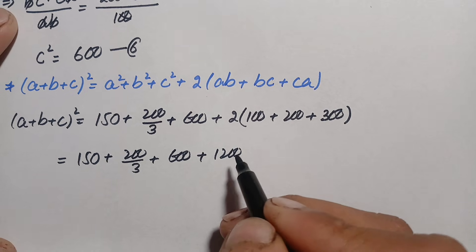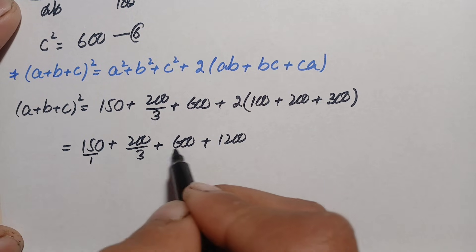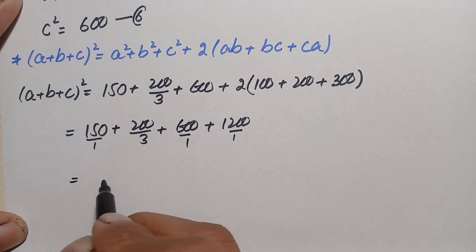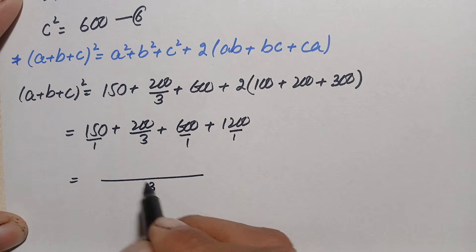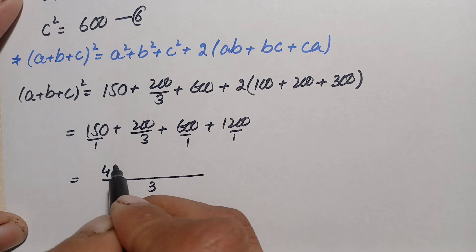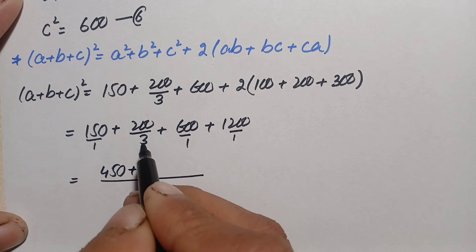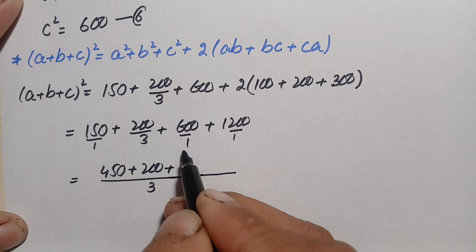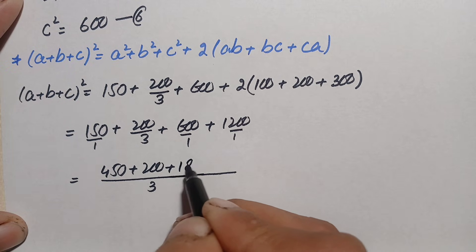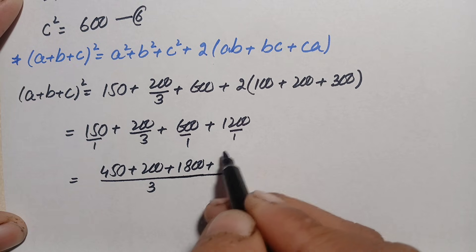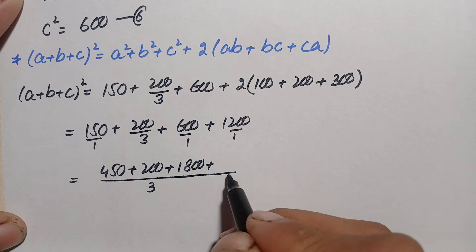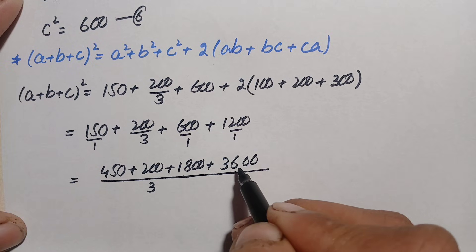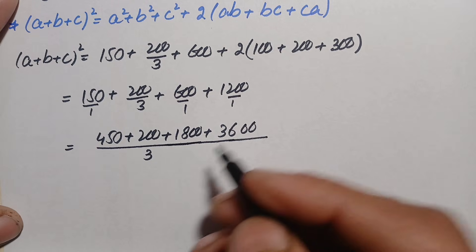So we have 150 + 200/3 + 600 + 1200. Taking the LCM of all terms, the LCM is 3. Multiplying through: 3 times 150 is 450, 1 times 200 is 200, 3 times 600 is 1800, and 3 times 1200 is 3600, all over 3.